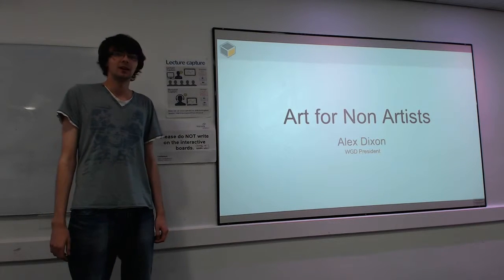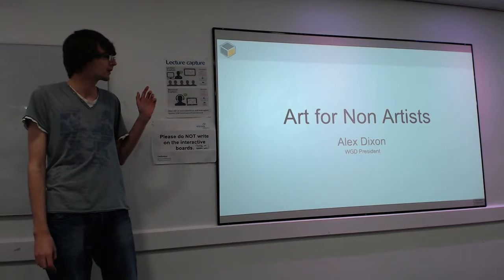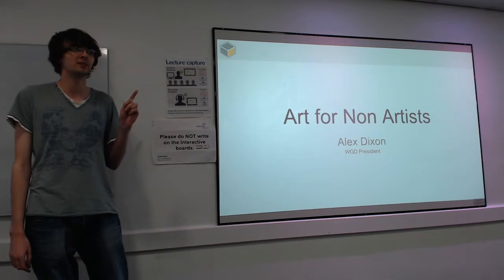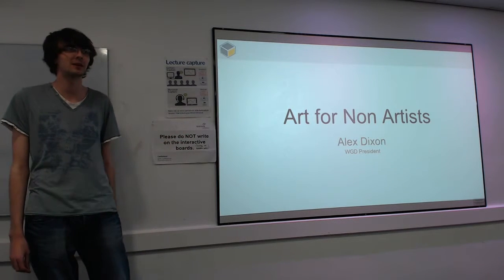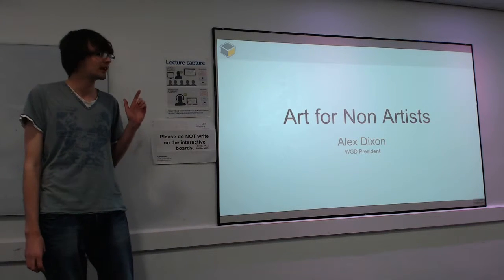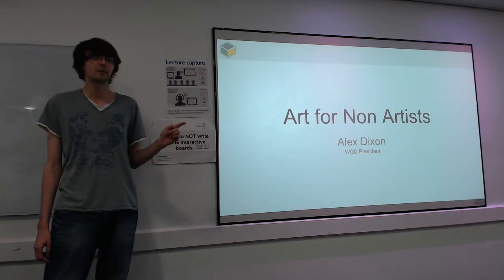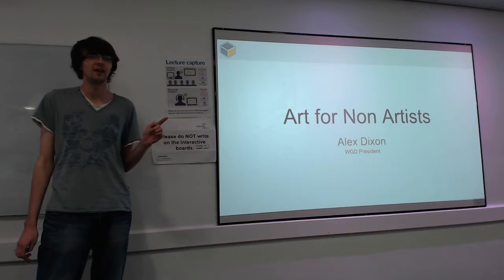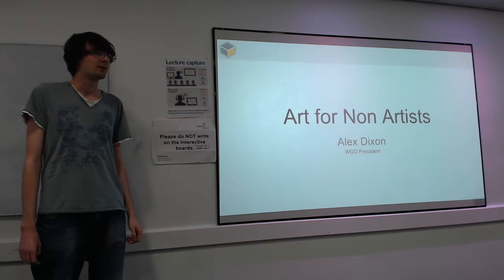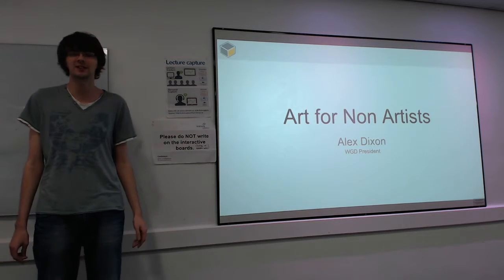Hi everybody, welcome back — pretty much everybody I think — to the second talk of the year. The first one was the welcome talk last week. I'm pretty sure I'm not giving any more talks this year, so you'll have far more interesting people talking to you. This talk is going to be about essentially how to do art if you're no good at art. This is probably quite useful for the computer scientists among us — no offense — but there's also stuff even if you are good at art that's going to be relevant, so you're not missing out.